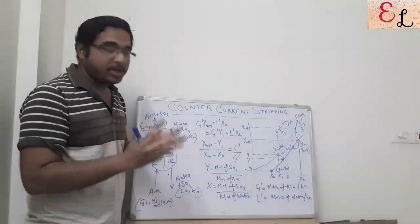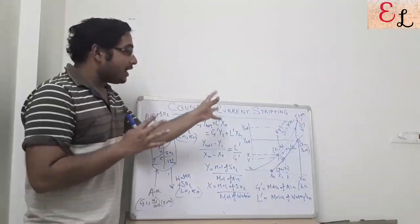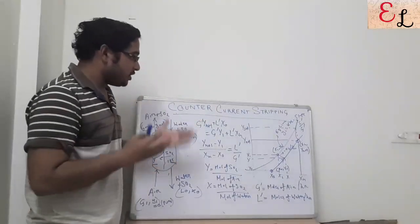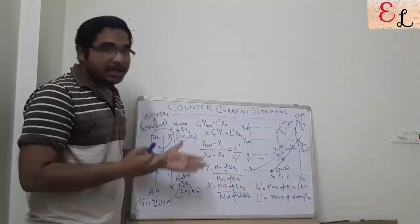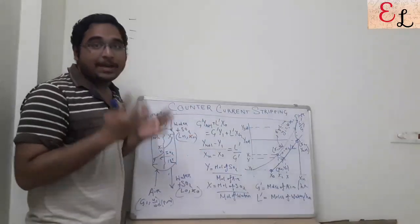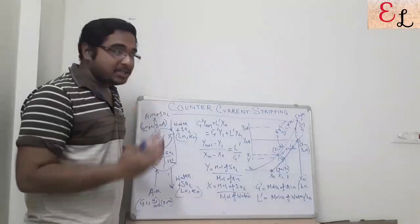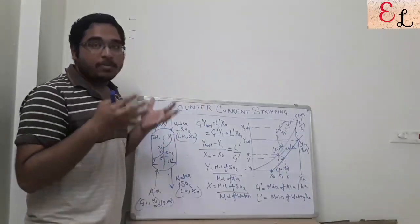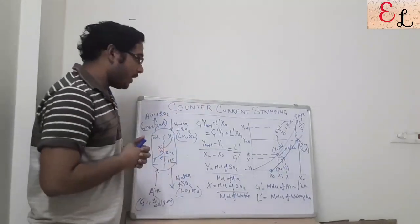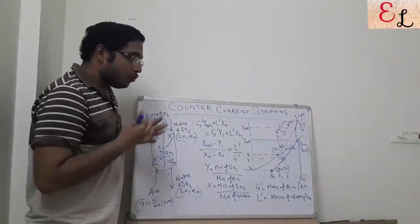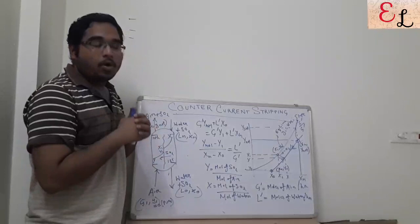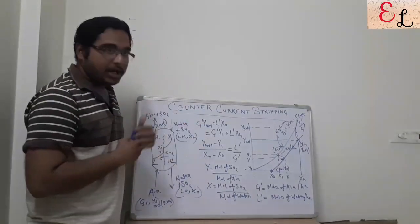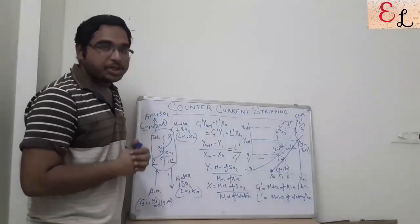Then you will get a clearer idea of what stripping is — exactly the opposite of absorption — and how to graphically approach the problem, because many questions have come time and again from counter-current absorption and stripping, particularly the graphical approach, the minimum liquid flow rate, how to find that, or the saturation mole ratio or mole fraction.